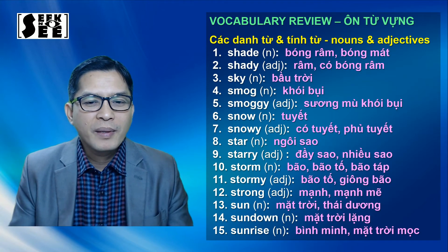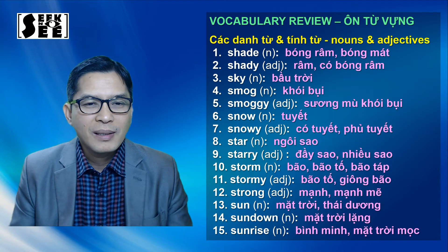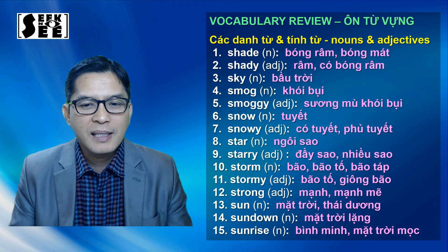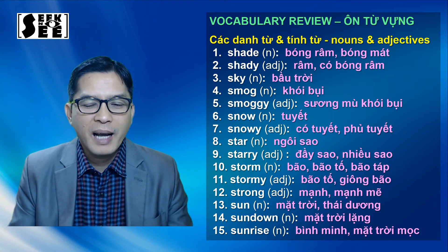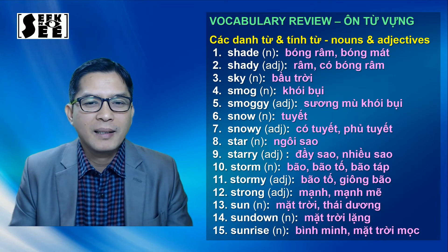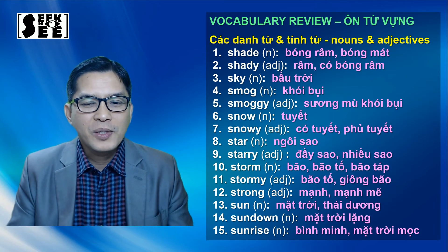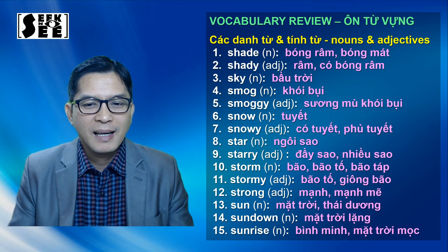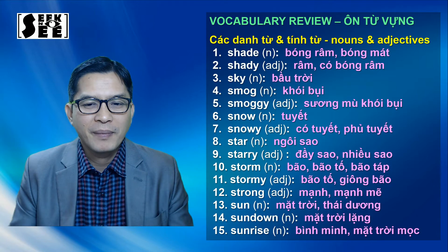Rồi số 14: sundown, sundown, tức là mặt trời lặn. Ở đây chúng ta sửa lại chính tả, chữ lặn ở đây không có chữ g nhé. Mặt trời lặn không có g. Số 15: sunrise. Sunrise là bình minh hay là mặt trời mọc.